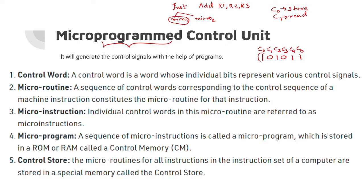If the control signal value is 1, that signal is active — meaning that operation is performed. If the control signal value is 0, like C1 equals 0, then C1 is not active at all. Therefore, if the control signal is active it performs its operation; if inactive it does nothing. One control word will perform a specific operation.